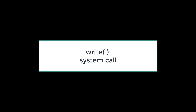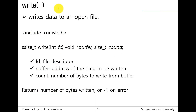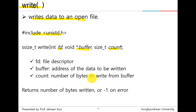Next, the write system call. The write system call writes data to an open file. It needs the unistd.h header file and has three arguments: fd (the file descriptor), buffer (the address of the data to be written), and count (the number of bytes to write from the buffer). The result returns the number of bytes written, or minus 1 on error.